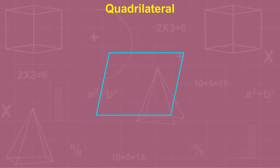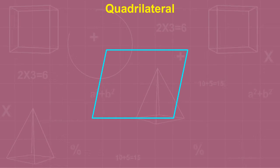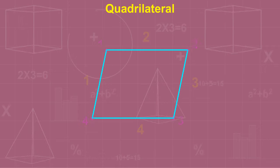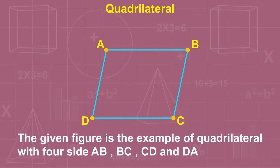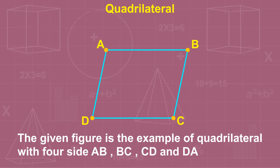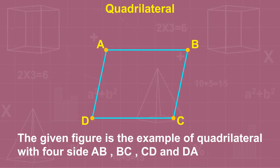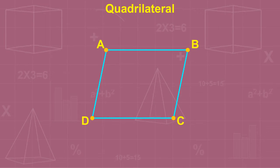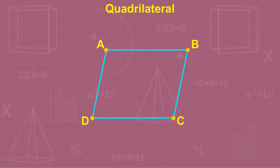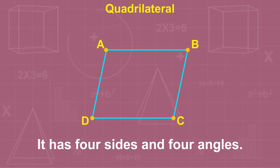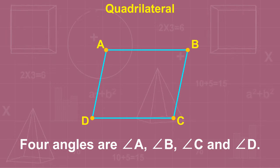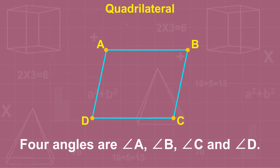A quadrilateral is a closed figure made up of four straight edges and four corners. It is also named a quadrangle. The given figure is an example of a quadrilateral with four sides AB, BC, CD, and DA. It is also defined as a closed figure formed by four line segments. It has four sides and four angles: angle A, angle B, angle C, and angle D.